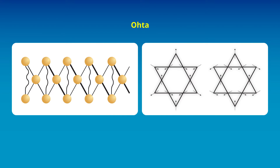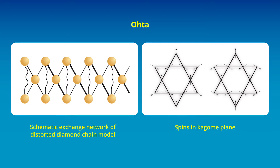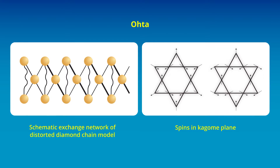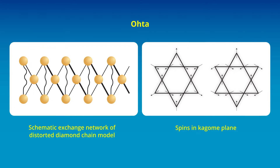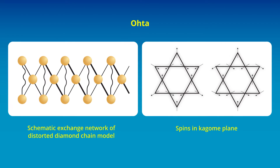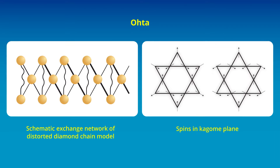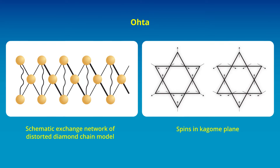Ota elaborates on the dynamic aspects of DMI in quantum spin systems, focusing on its role in exotic quantum magnets with unique geometries like chains, kagome lattices, and honeycomb structures.